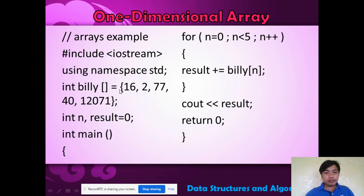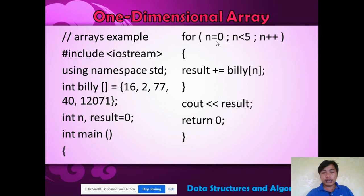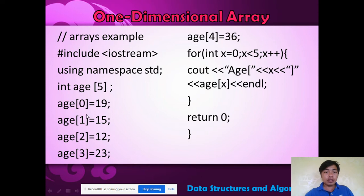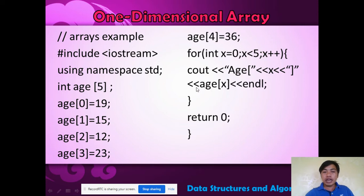Another example using a namespace: integer billy with its elements, and a result variable. We can use a loop — if n equals 0, we iterate through billy[n] to get the sum. We can also initialize our array by specifying each index individually: index 0 is 19, index 1 is 15, index 2 is 12, index 3 is 23, index 4 is 36, and then retrieve the values using a loop.